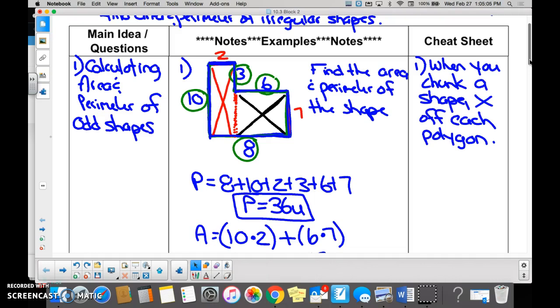And then to find the perimeter, we just took all of our side lengths and added them together.